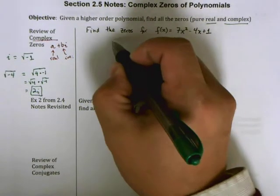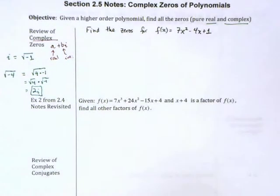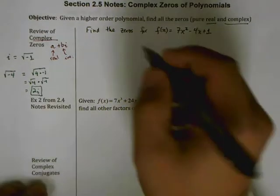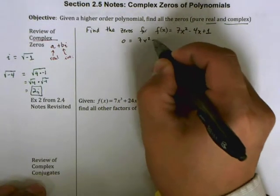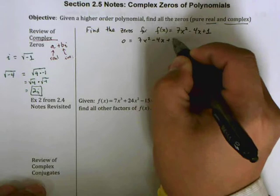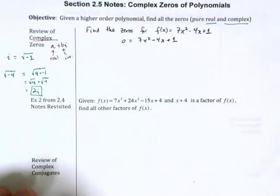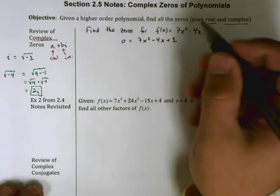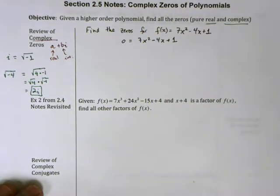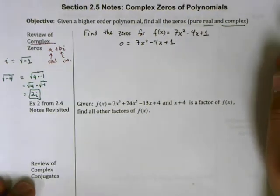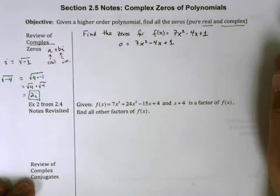We're going to start out by setting this equal to 0: 0 = 7x² - 4x + 1. You can use your favorite method from here—you can try to factor, although I don't think this can be factored into integers, you can use completing the square, or you can also use the quadratic formula. I'm going to use that.